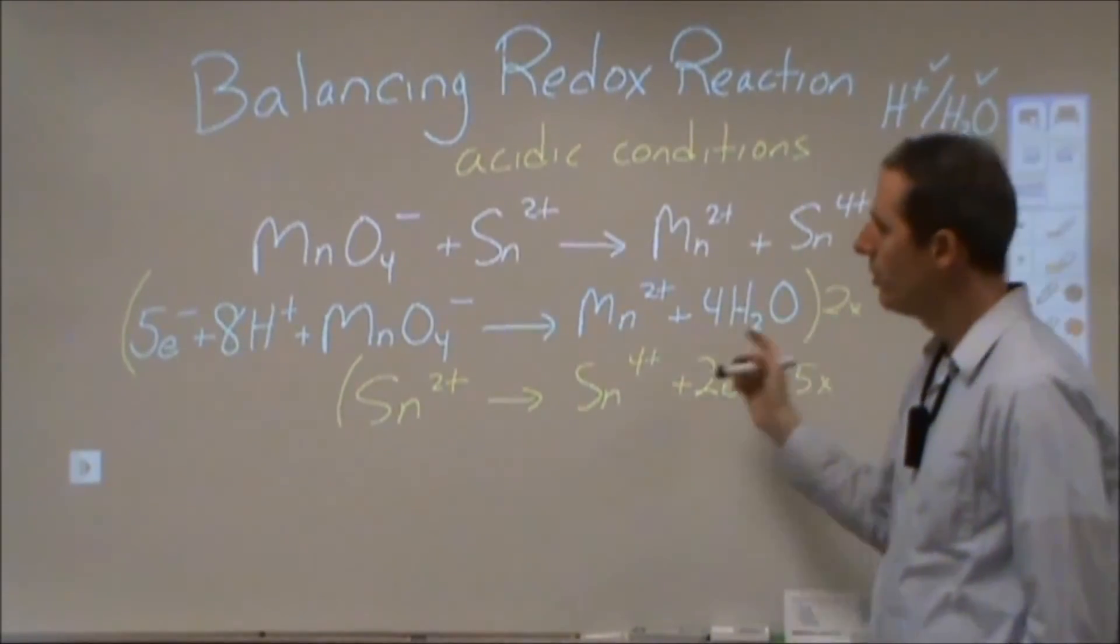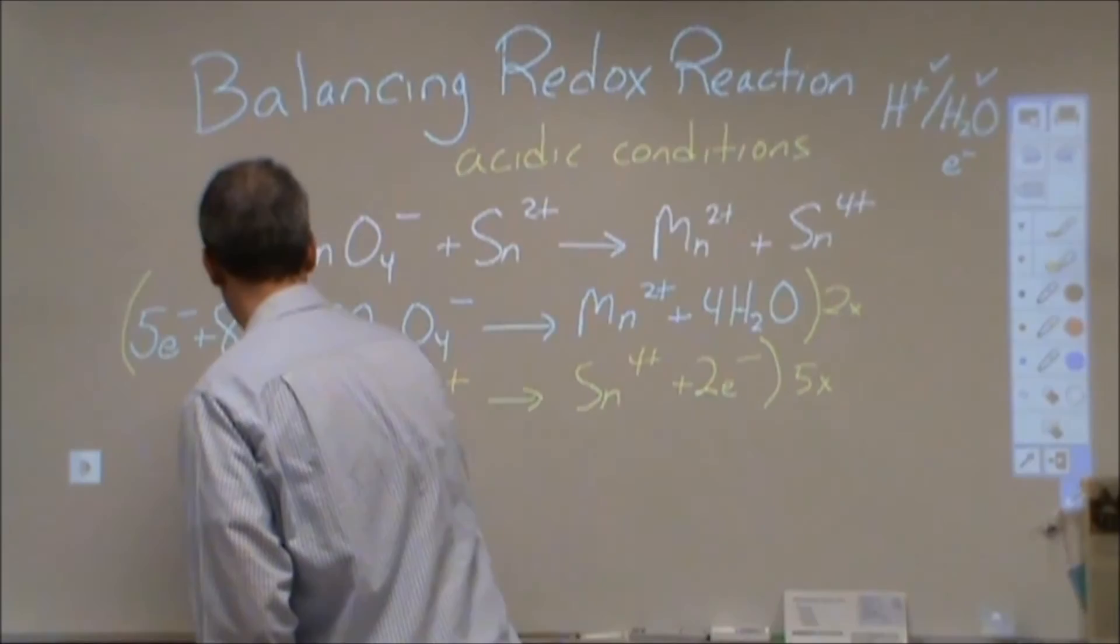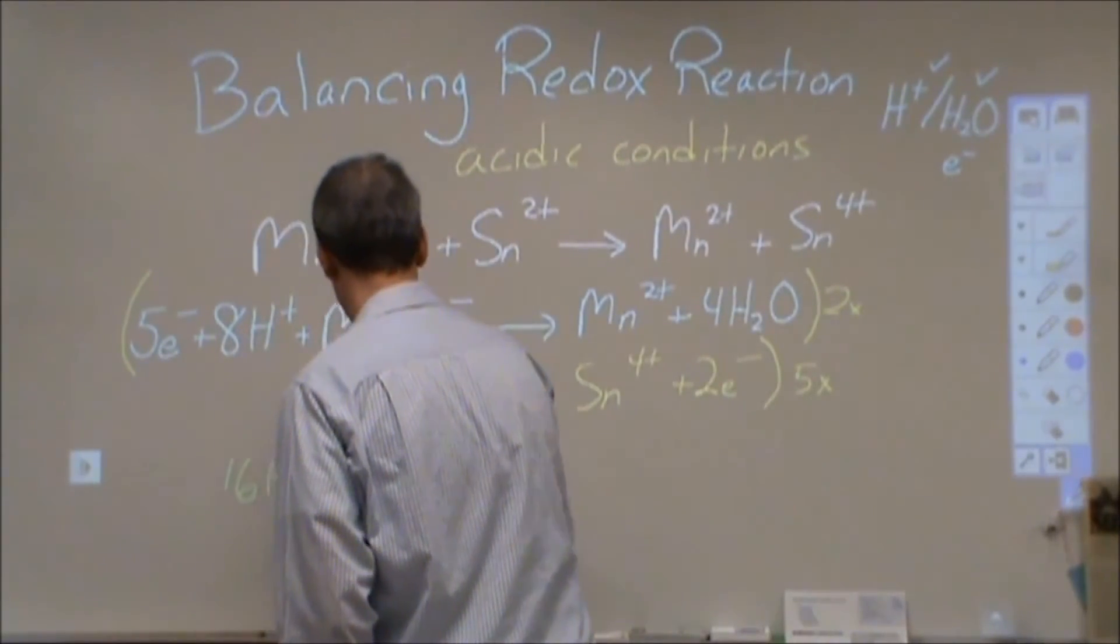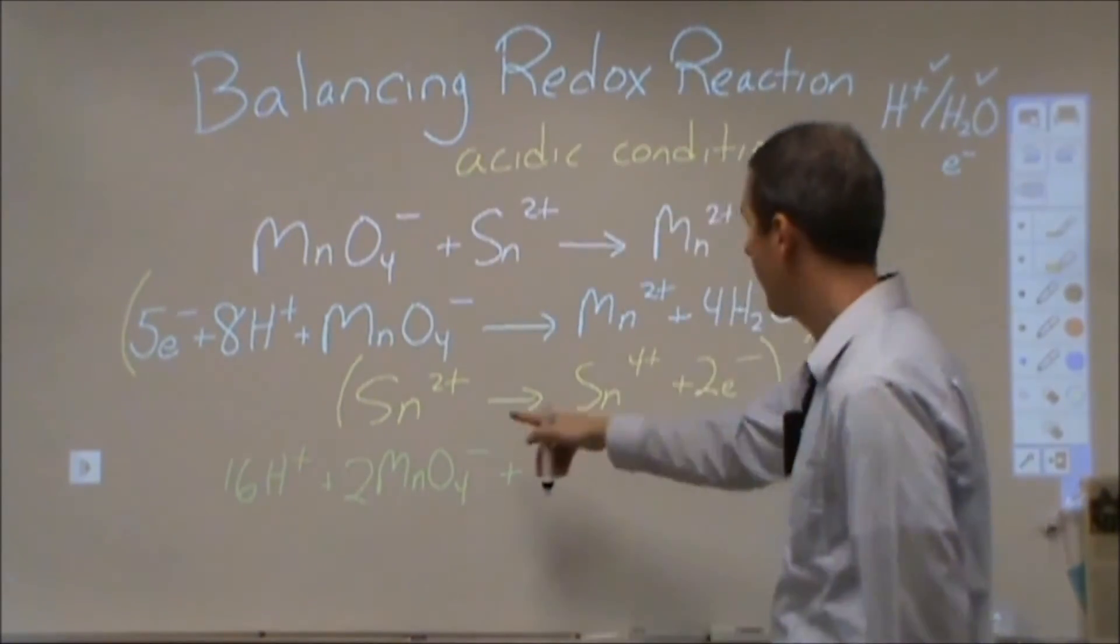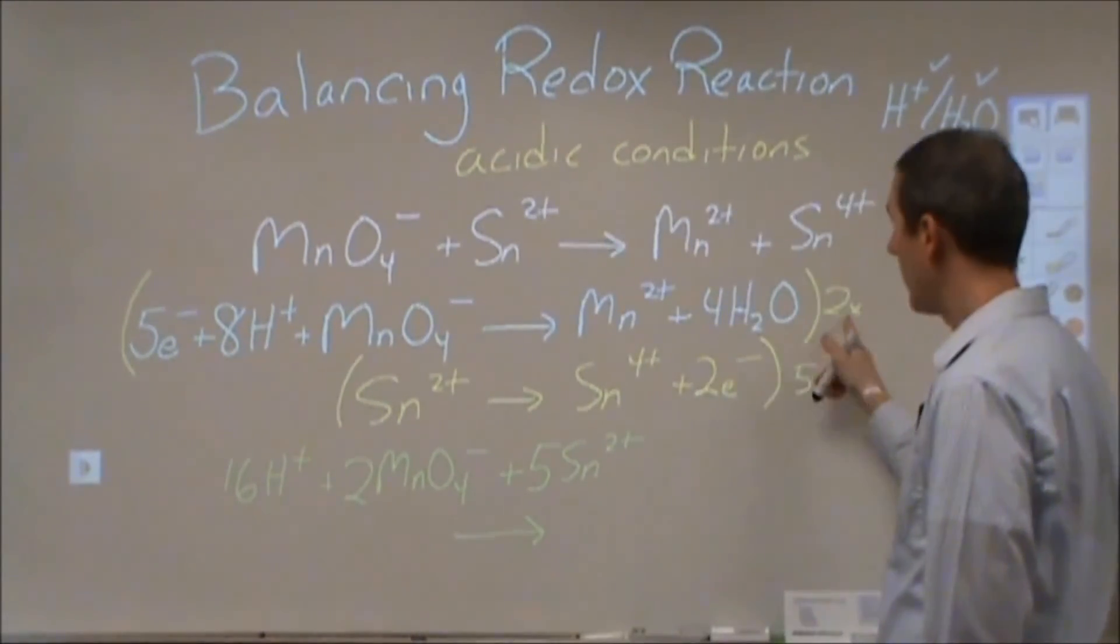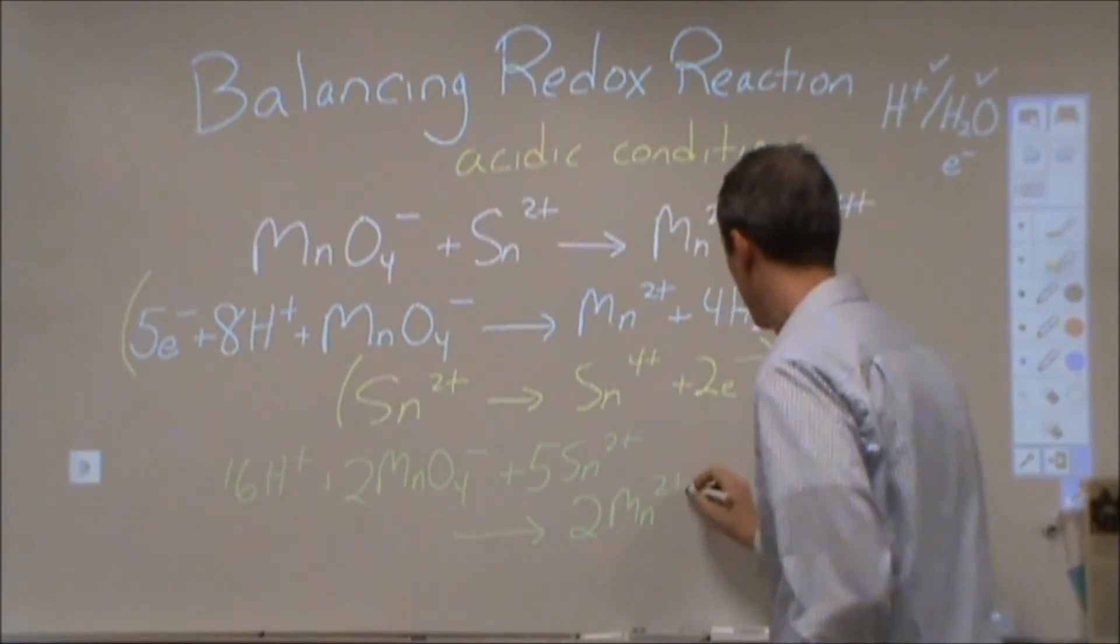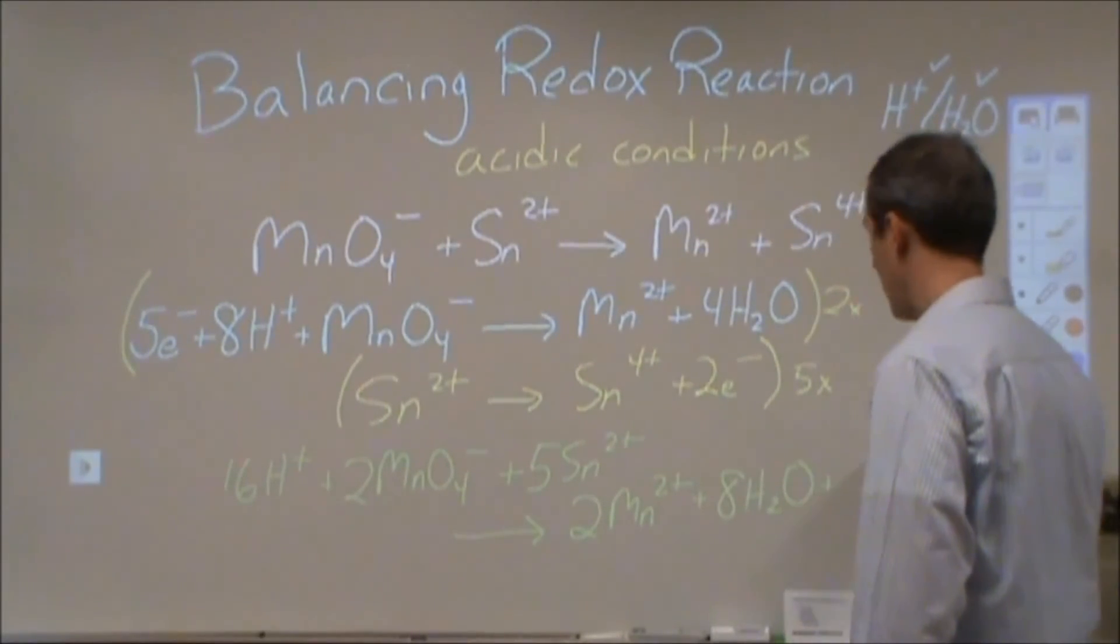So we're going to take two times eight H+ to get sixteen H+. And then two permanganate. And then here we're going to have five Sn2+. And that's all our reactants. And then for our products, we're going to have two Mn2+, eight waters, and five Sn4+.